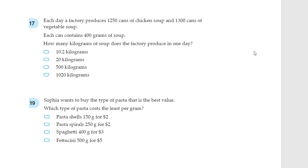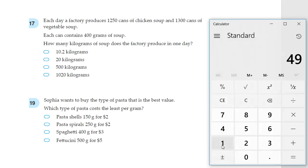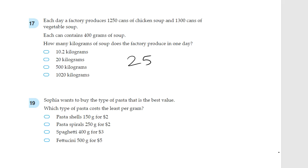Next question. Each day a factory produces 1,250 cans of chicken soup and 1,300 cans of vegetable soup. Each can contains 400 grams of soup. How many kilograms of soup does the factory produce in one day? Alright, so first of all, let's add those two numbers up. So all together, how many cans of soup do they produce each day?